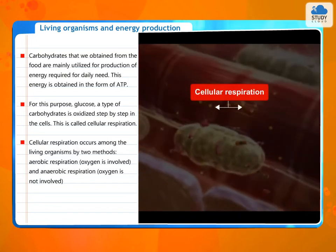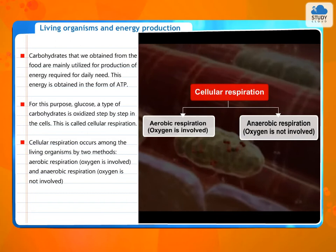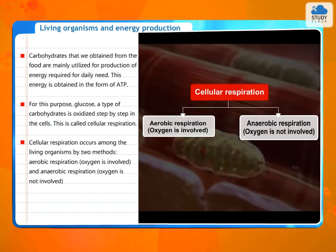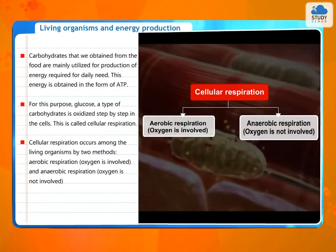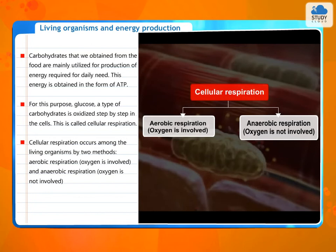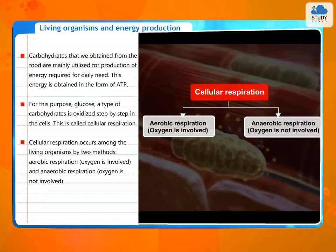Cellular respiration occurs among living organisms by two methods: aerobic respiration, in which oxygen is involved, and anaerobic respiration, in which oxygen is not involved.